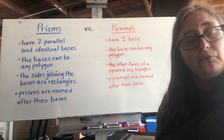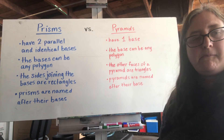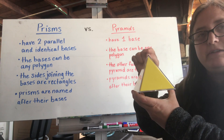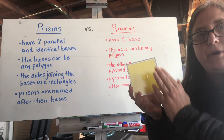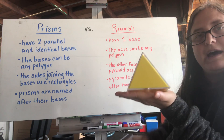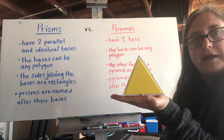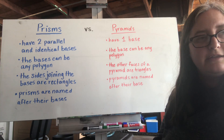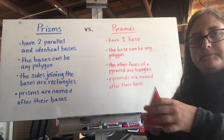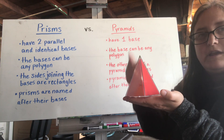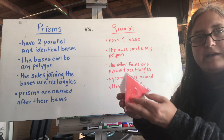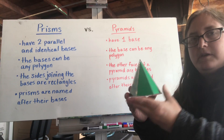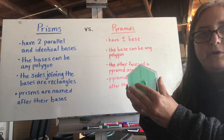Whereas pyramids only have one base. This would be a pyramid — it's got a pointy vertex right here, but only one base, only one side that is its bottom. It doesn't have an identical top, just one base. Here is another pyramid — pointy vertex, one base, one side that it's sitting on. And here's one more pyramid — pointy top, one base.